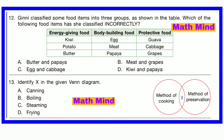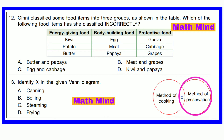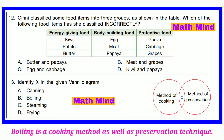Question number 13. Identify eggs in the given Venn diagram. This circle represents method of cooking. This circle represents method of preservation. So eggs is combined of both — method of cooking as well as method of preservation. Eggs is option B: boiling. Boiling is a cooking method as well as a method of preservation.